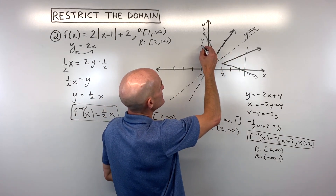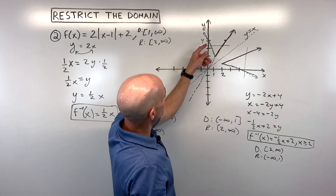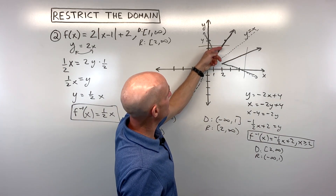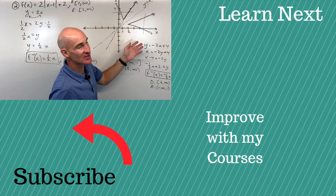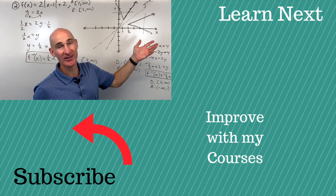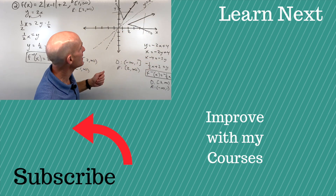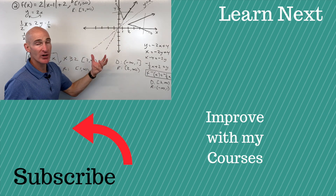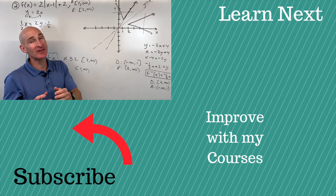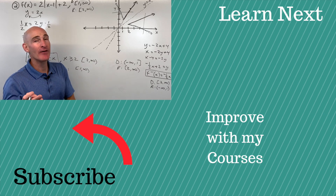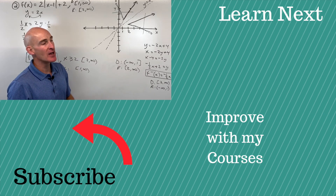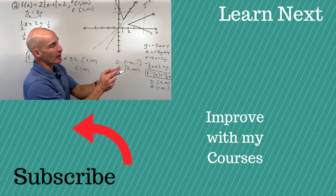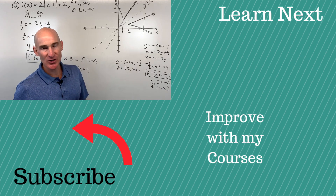So what the horizontal line test tells you is: if it crosses more than once, the inverse will fail the vertical line test. It's a shortcut technique. What we're talking about is how to restrict the domain so that the inverse is a function. If you want to see more examples, follow me to another video on this topic and we'll get some more practice.